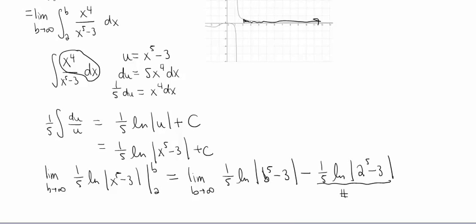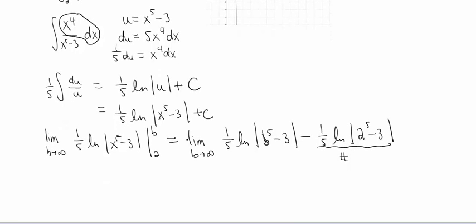But the first piece here, hmm, I don't know about that one. Okay, that one definitely looks suspicious. So if we think about the inside of this function. So what happens to b to the 5th minus 3 as b gets really, really, really big? Well, that piece is also going to get really, really big, right? So that piece is going to go to infinity as b goes to infinity.